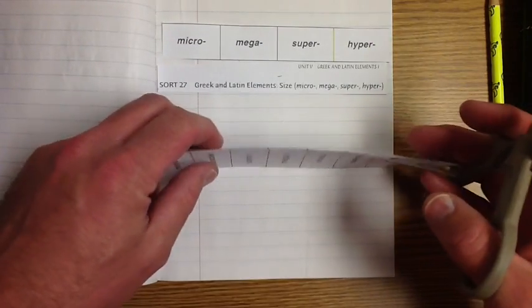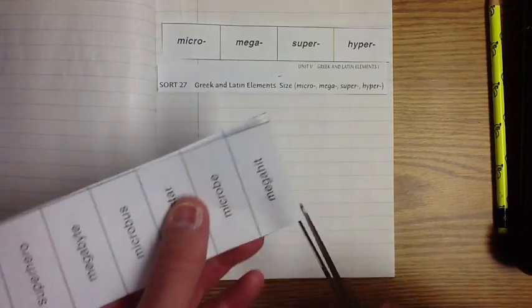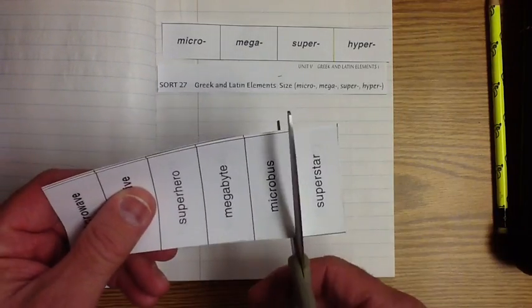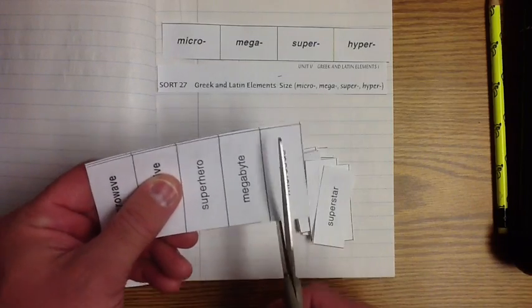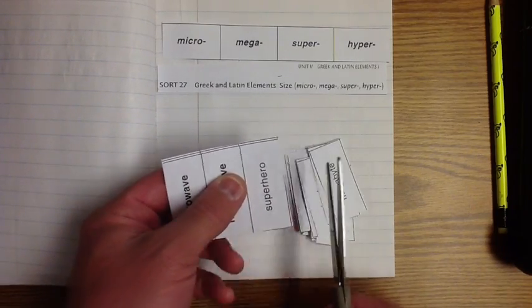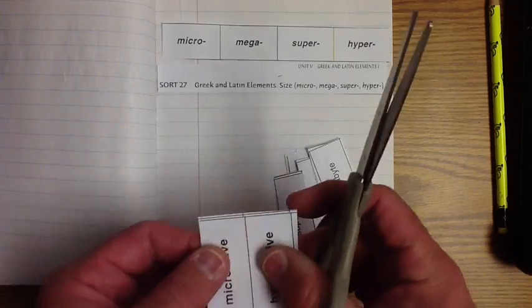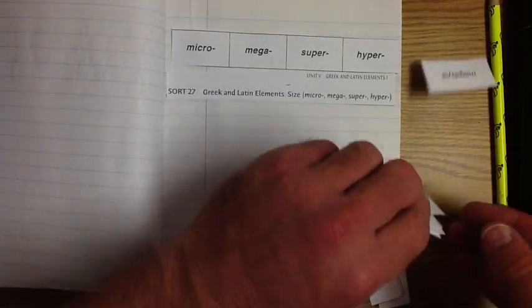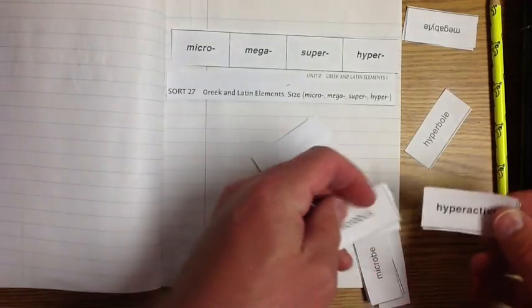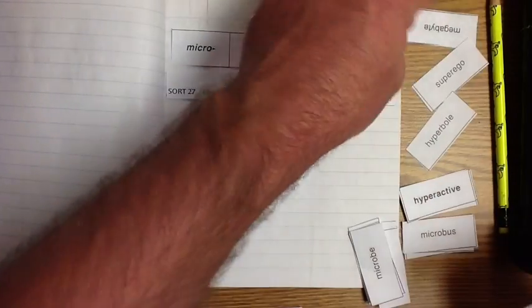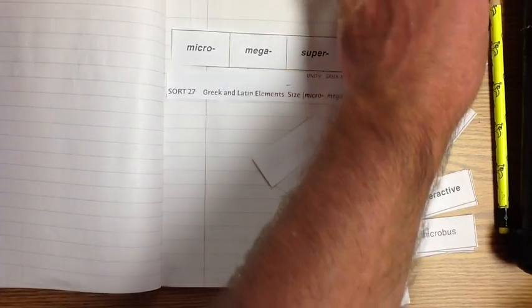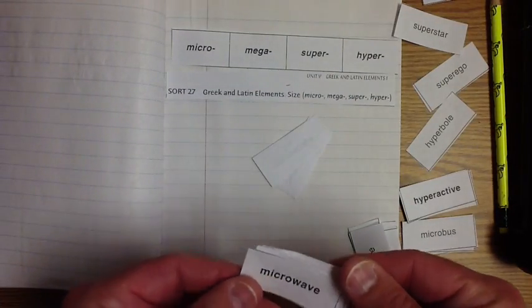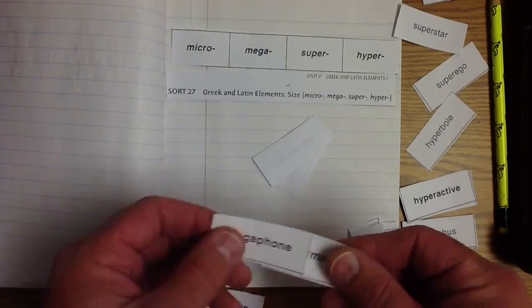All right. So what I need you to do while we're doing these spelling words is as I say them and write them, I need you to say them and write them. Remember, you can always pause this video at any time just in case you need to set up the words or write it, because sometimes I move pretty fast. So make sure you use what you need and pause it or whatever.